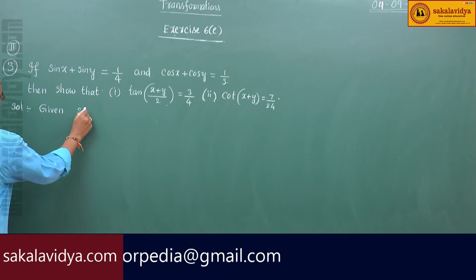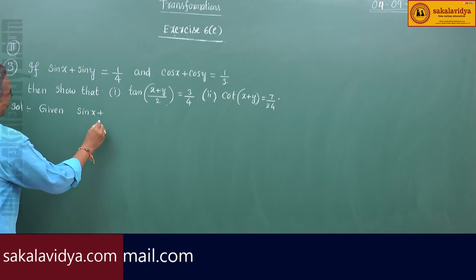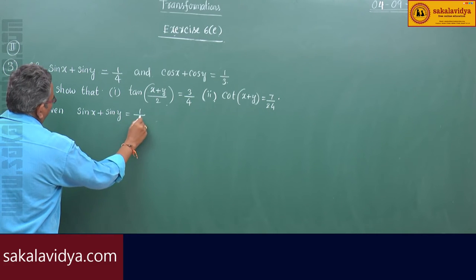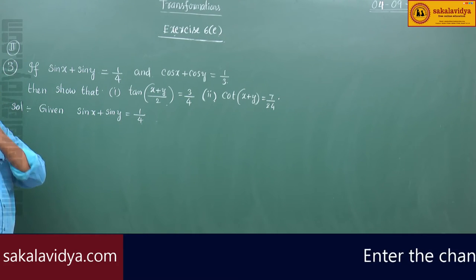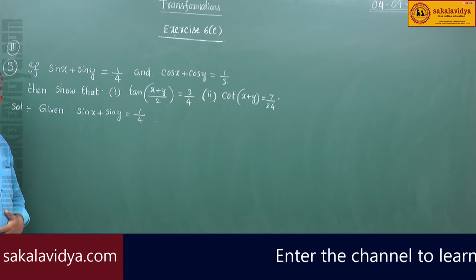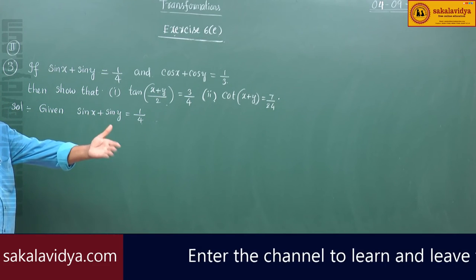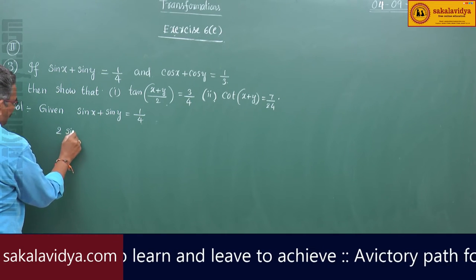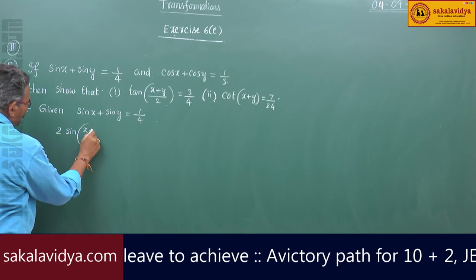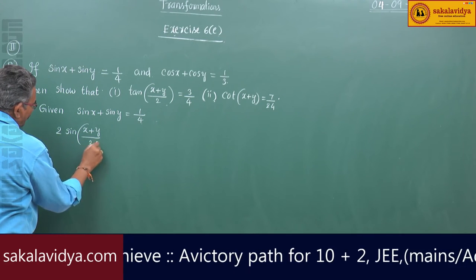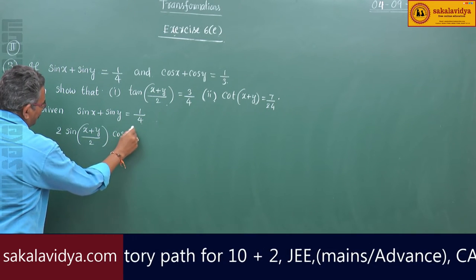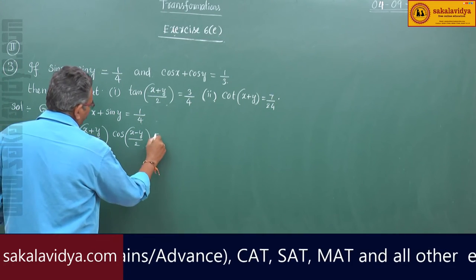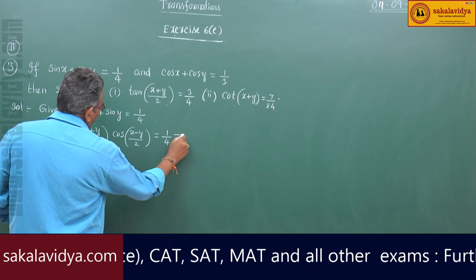Given sin x plus sin y equals 1 by 4. Using the sin C plus sin D formula — 2 sin((C+D)/2) cos((C-D)/2) — this can be written as 2 sin((x+y)/2) cos((x-y)/2) equals 1 by 4. Call this equation 1.